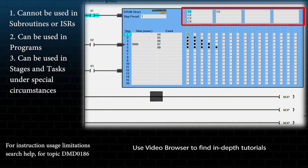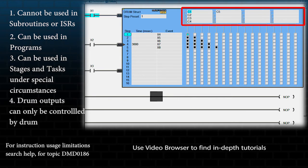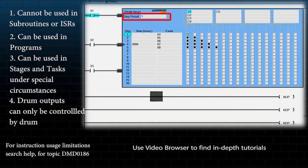Any outputs that you place in the drum will be controlled by the drum when the PLC is in run. So do not try to control any of these outputs elsewhere in your program. The step preset is the step on which the drum will start when enabled or reset.